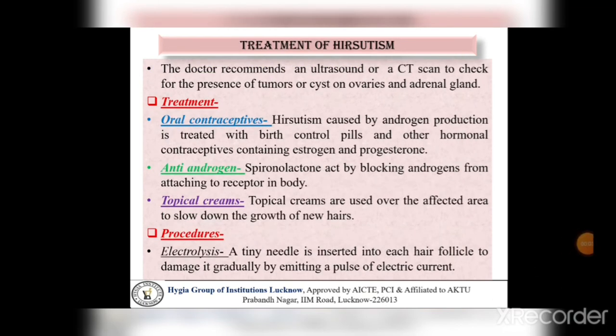The doctor recommends an ultrasound or a CT scan to check the presence of tumors or cysts on ovaries and adrenal gland। In the case of hirsutism, जो doctor होता है वो ultrasound या computer tomography (CT) scan को recommend करता है ताकि हम यह चेक कर सकें कि ovary या adrenal gland में किसी तरह की cyst या tumor तो नहीं है। अगर adrenal gland में cyst हो, तो वो androgen hormone के level को imbalance कर देता है और hirsutism condition cause होती है।